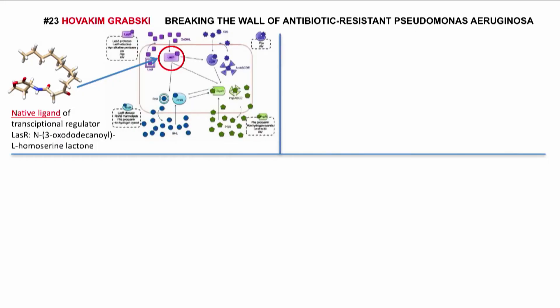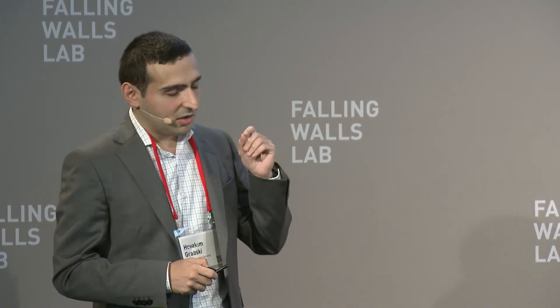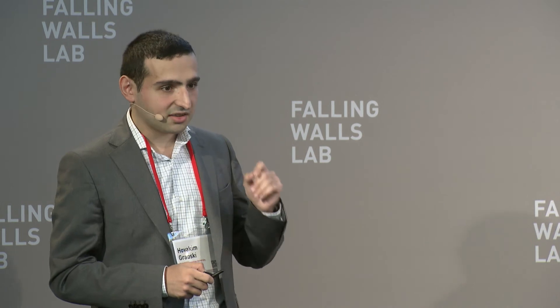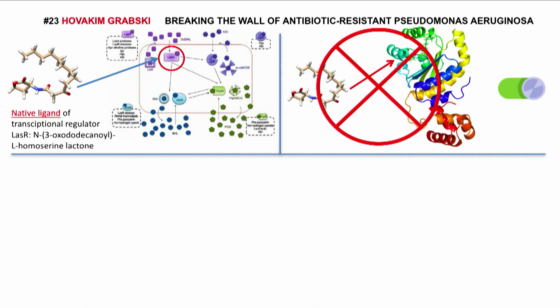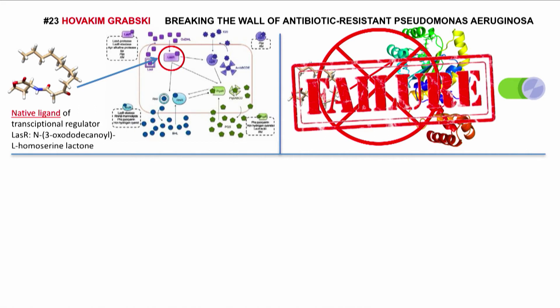Developing treatments against biofilms requires an understanding of how it is regulated. So how does the system work? It has been shown from experiments that the transcriptional activator protein LasR regulates biofilm formation and virulence gene expression, which includes antibiotic and multi-drug resistance. This protein acts like a switch, and it is turned on by its native activator. So if we turn this protein off, we could solve the problem. But this approach for drug design has not worked in many cases.